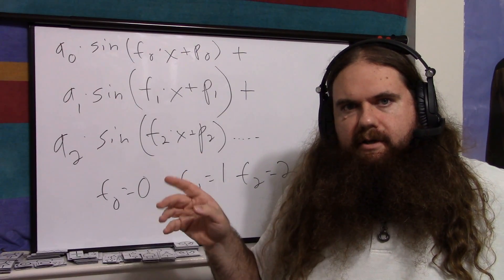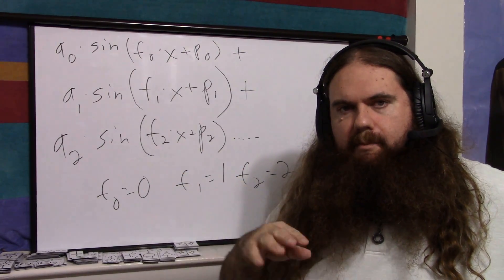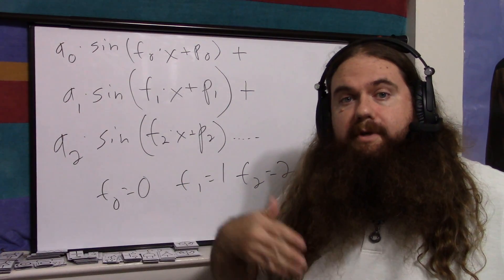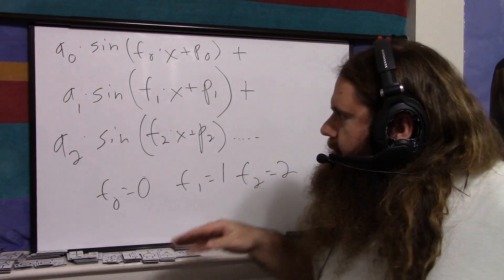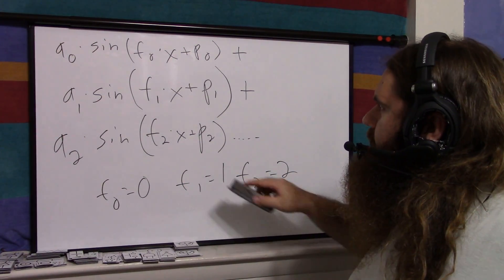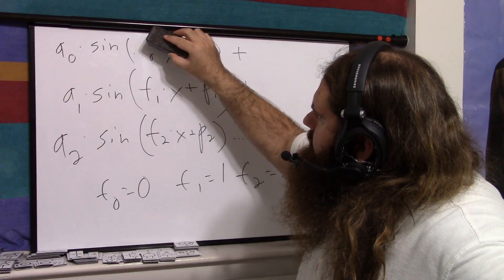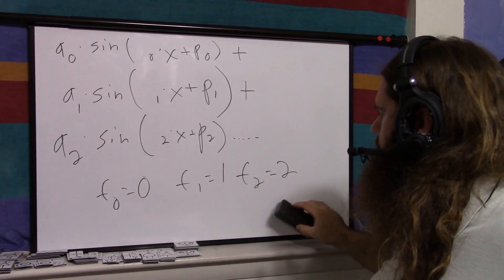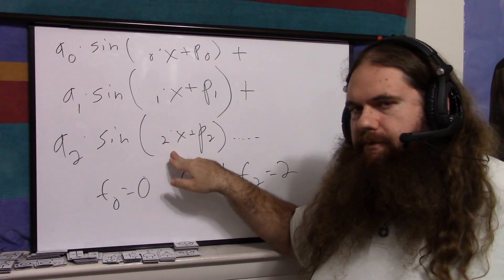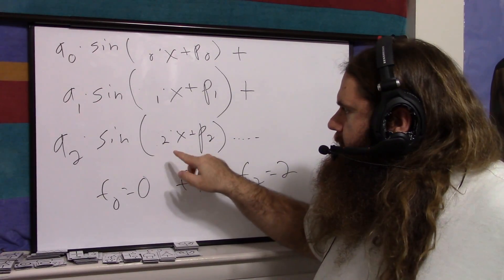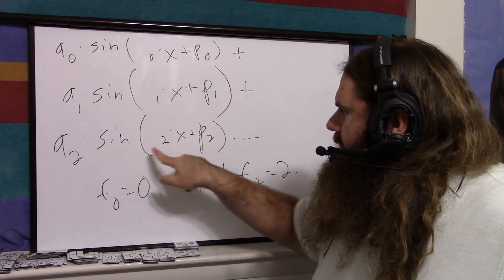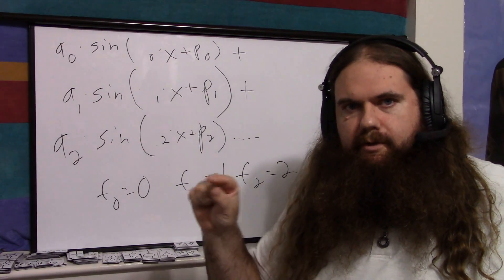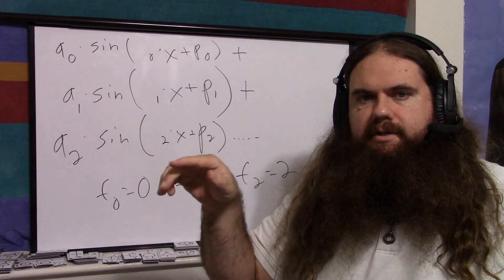Usually this is done with what's called complex numbers during a fast Fourier transformation — we'll get there eventually. Right now, basically f0 is 0, f1 is 1, f2 is 2, and so forth. So if it's not intuitive why this is the frequency: you're taking the sine over x, so x goes from 0 to 2π, and that's your sine.